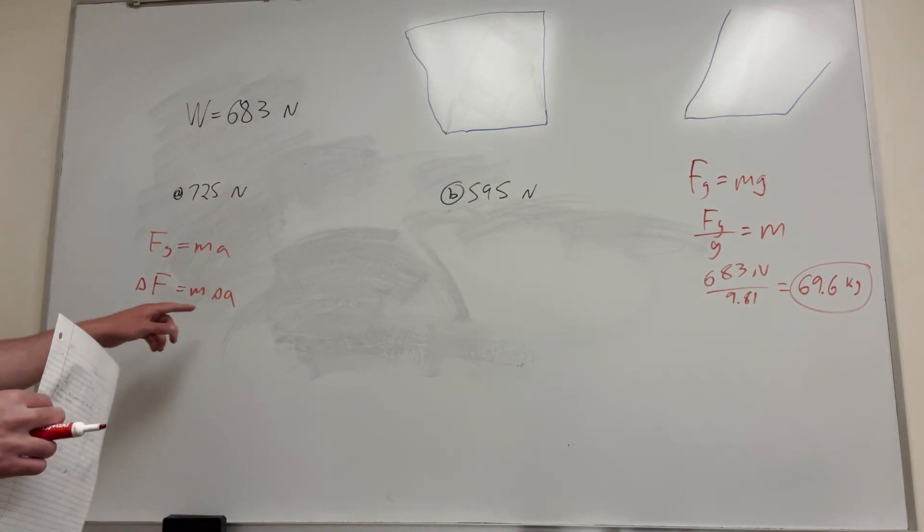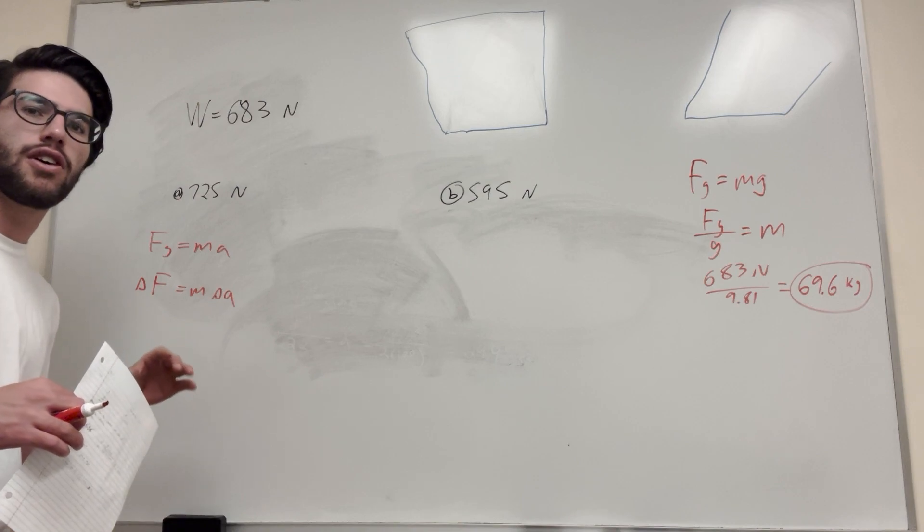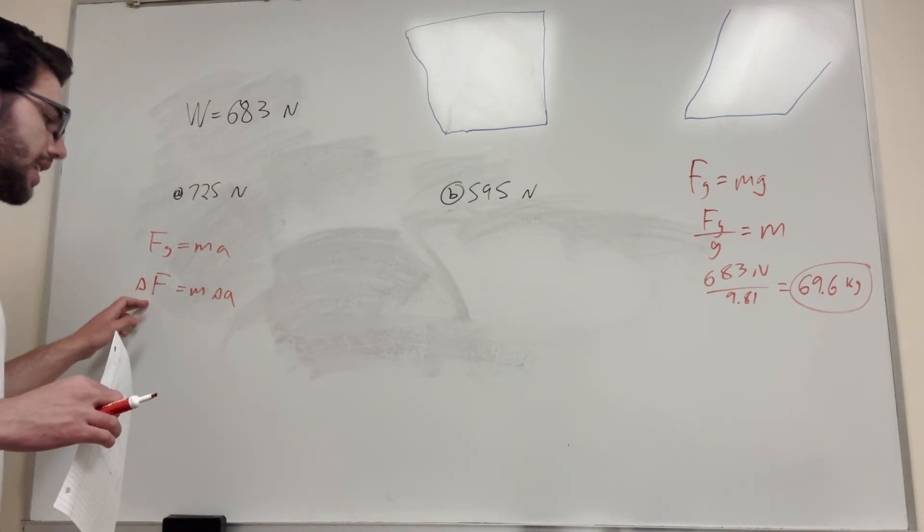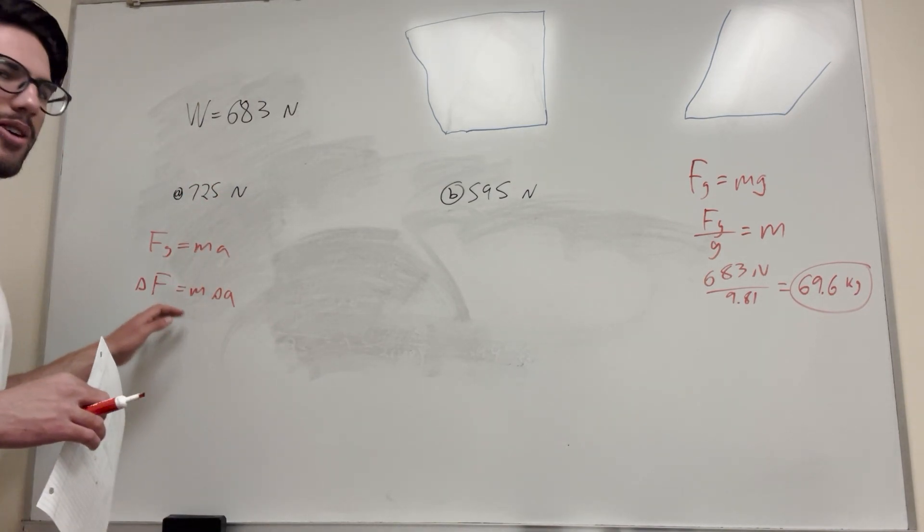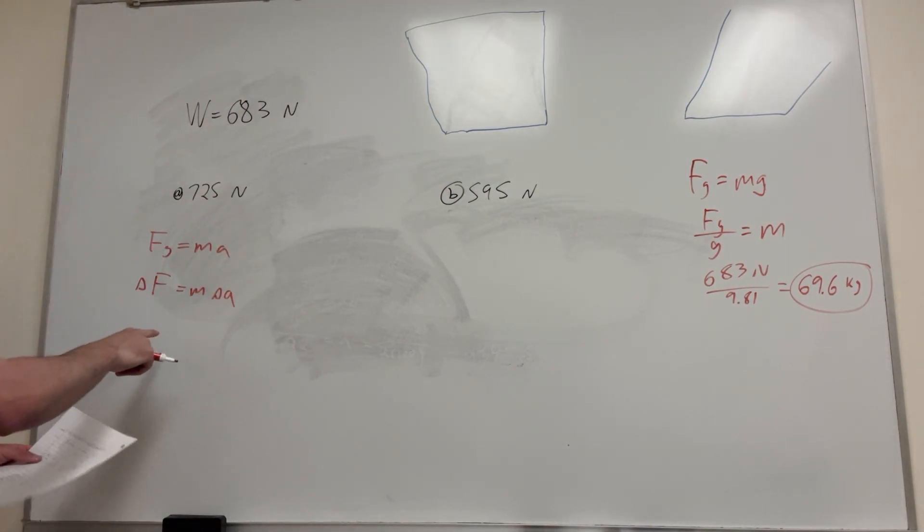So its acceleration right now is negative 9.81, but if you take change of acceleration, it's going to be how far from that does it change, and then delta F is going to be how much does that change. So this is an equation you probably don't see very often, but it's how we're going to solve this problem. So delta F, that's going to be how much we weigh in the elevator subtracted by how much we weigh outside the elevator.